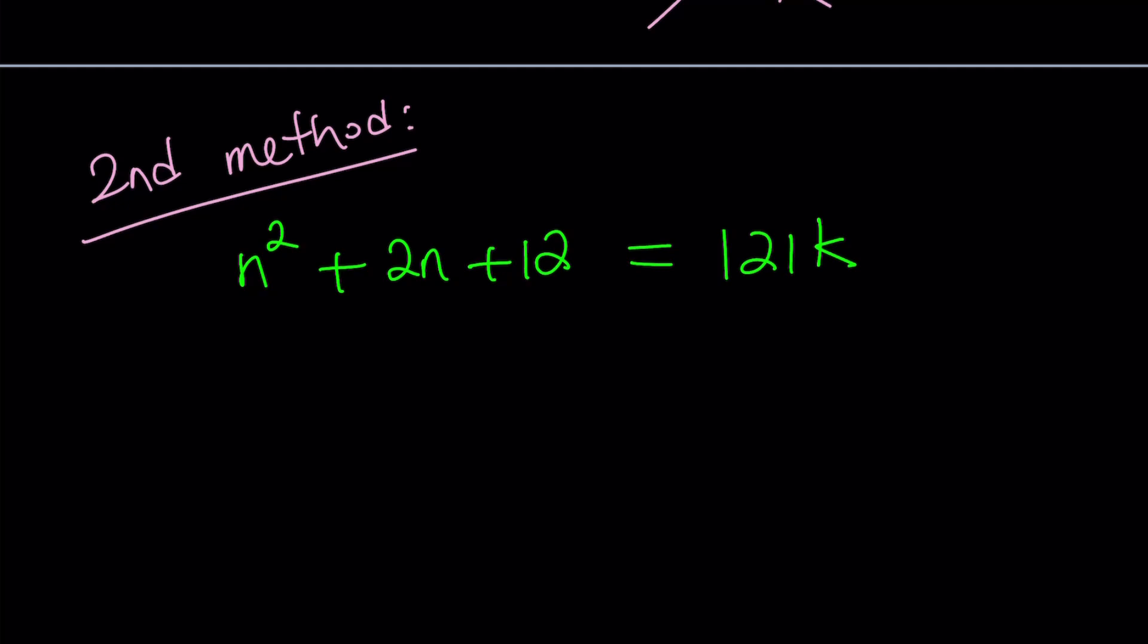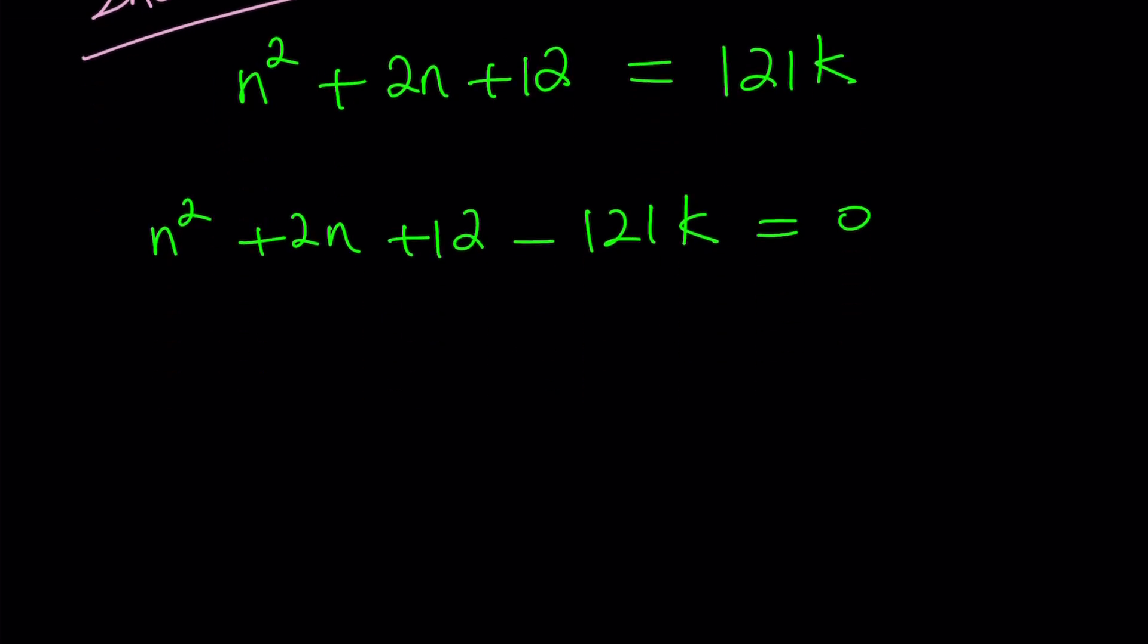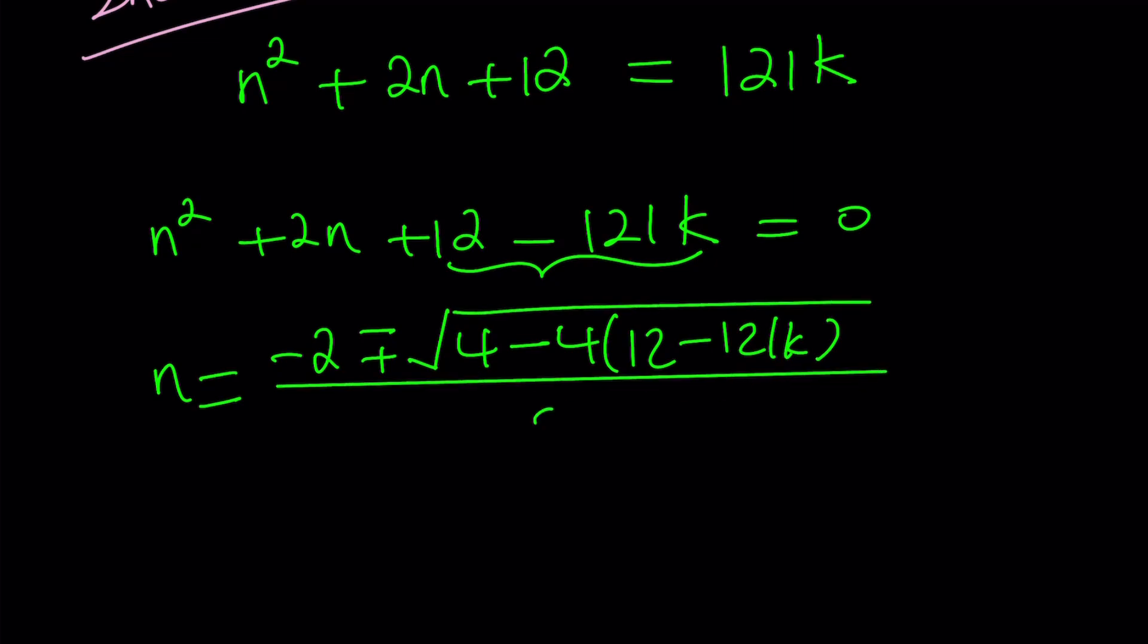So we're going to put everything on the same side. And I'm going to solve this as a quadratic equation. Let's go ahead and solve it using the quadratic formula. The quadratic formula tells us n equals negative b plus minus, by the way this became our constant, plus minus the square root of b squared which is 4, minus 4ac, a is 1, so 4 times this. And all of that is divided by 2a, which is 2.